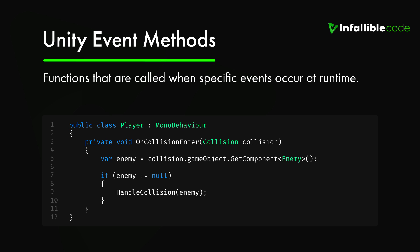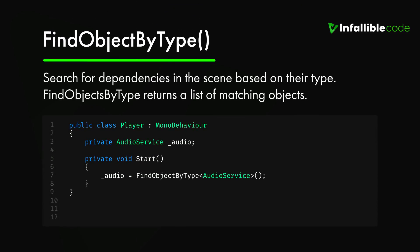Next up is internal resolution. The three methods we'll be covering are FindObjectByType, static instances, and dependency injection. The FindObjectByType method searches the scene and returns an active object of the type you pass it — if there's more than one, it returns the first one found. You can also use the plural version FindObjectsByType if you need a list of all matching objects. I wouldn't advise relying too heavily on this method because you don't always know what the state of your scene will be when it's called, and it can be pretty slow, so avoid using it in your Update method.